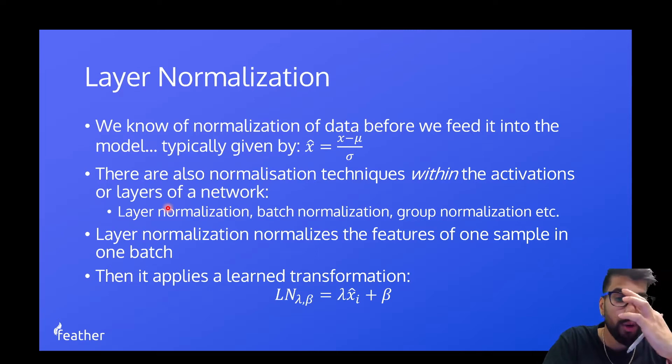I will describe the intuition and everything that's done on this slide. So what layer normalization does at a high level is it normalizes the features of one sample in one batch. So if we have a batch, let me draw this out real quick. If we have a batch of k elements, so batch equals x1, x2, up to xk.